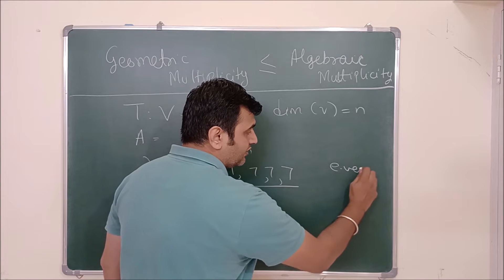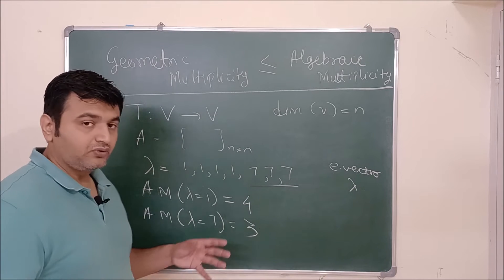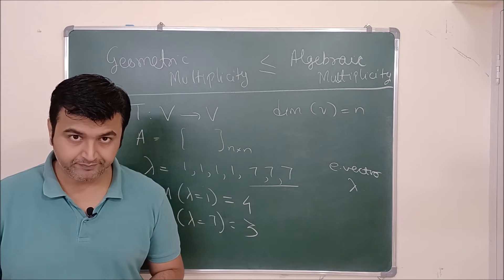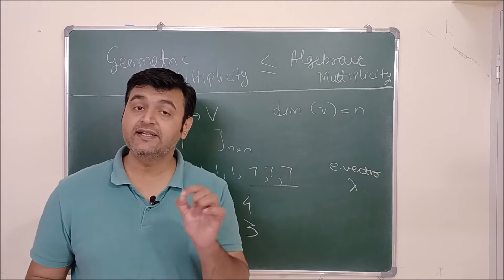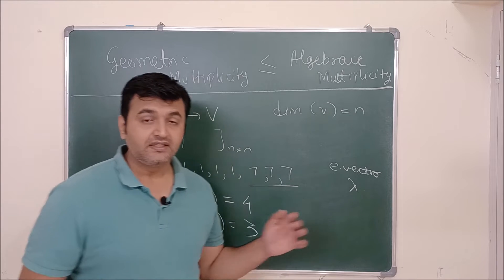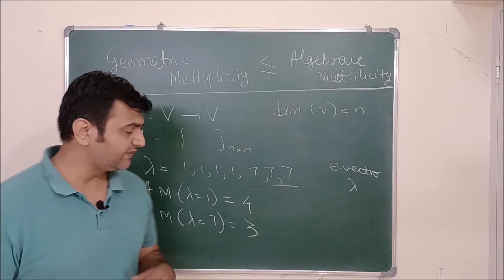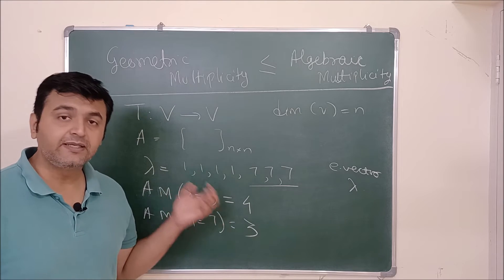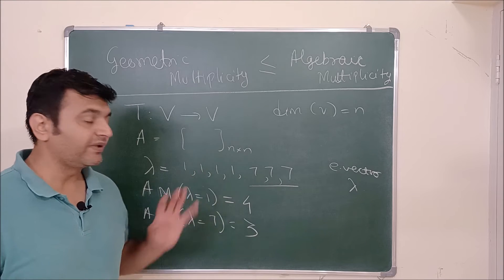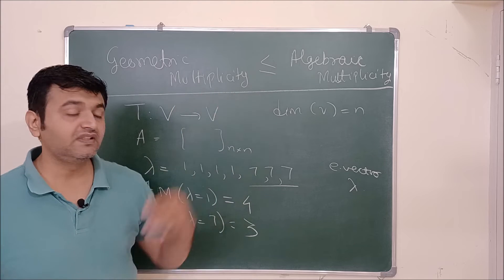Once you have an eigenvalue, say 7, you find the eigenvectors for that eigenvalue. The number of linearly independent eigenvectors for eigenvalue 7 is called the geometric multiplicity for λ=7. Similarly you find the number of linearly independent eigenvectors for λ=1 — that's the geometric multiplicity for λ=1. Today we are going to prove that GM is always less than or equal to AM.